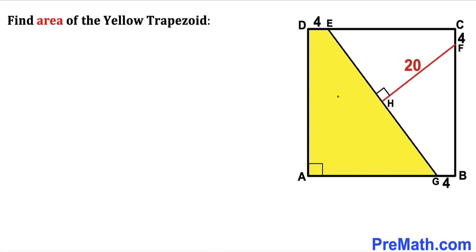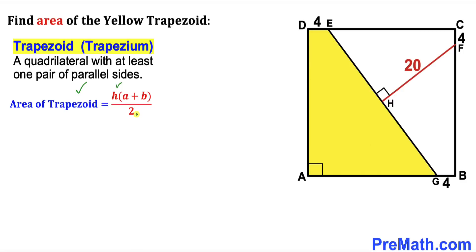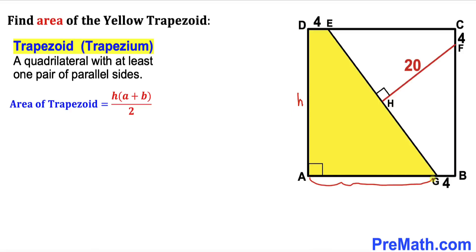Our very first step is calculating the area of this yellow trapezoid, so let's recall the definition of a trapezoid — sometimes called a trapezium: a quadrilateral with at least one pair of parallel sides. The area of a trapezoid is H times (a + b) divided by 2. In our case, side length AD is the height H, base AG is lowercase a, base DE is lowercase b, and we know b equals 4. So our task is to find H and base a.